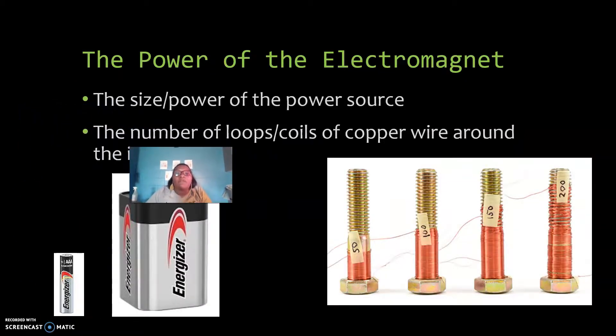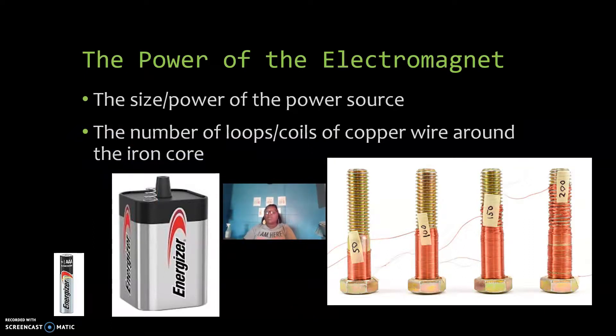So the power of the electromagnet. It's important for us to understand that an electromagnet can be made more powerful or less powerful depending on two things that we need to understand as sixth grade scientists. The size of our power source. If I'm using a AAA battery to power an electromagnet versus one of these larger batteries to power an electromagnet, which electromagnet will be stronger? The one powered by this smaller battery or the larger power source? If you guessed the larger power source, you're correct. The number of loops or coils of copper wire around that iron core, that will also make the magnetic field larger and the magnet more powerful. And so we see here, the more coils I wrap around my iron core, the more powerful it will become.